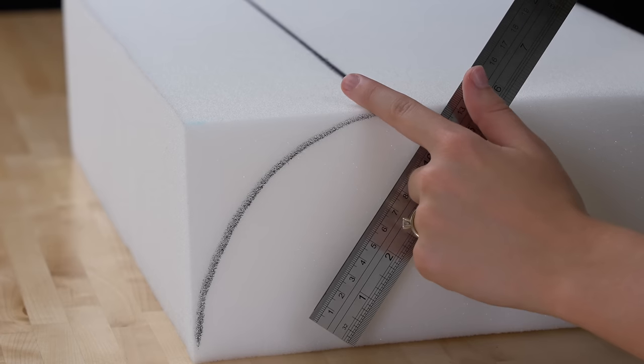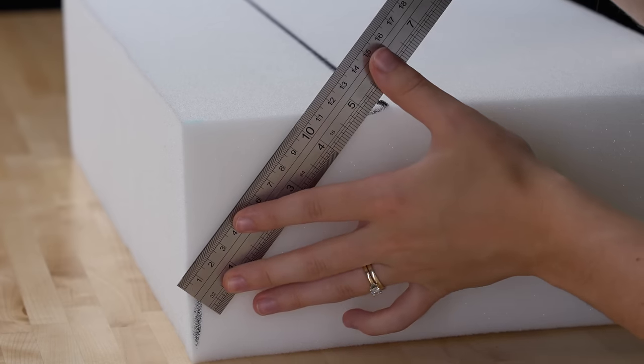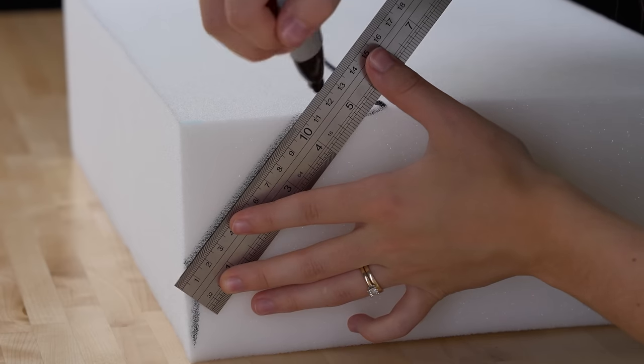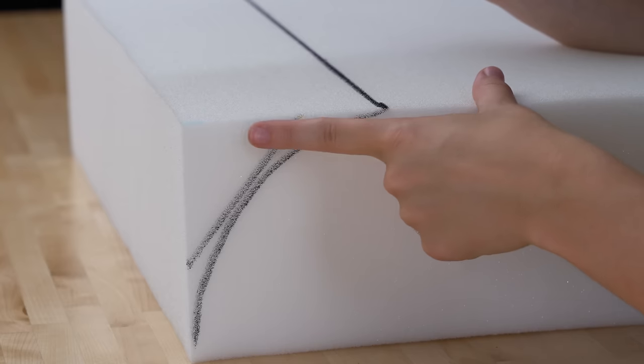Now we're going to draw a diagonal line across the top of our arc, just like so. And this is going to be the part that we cut with our blade foam saw.